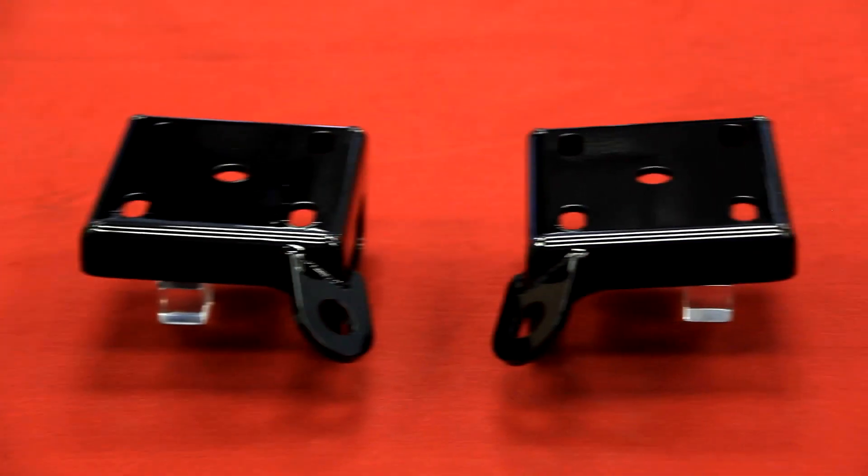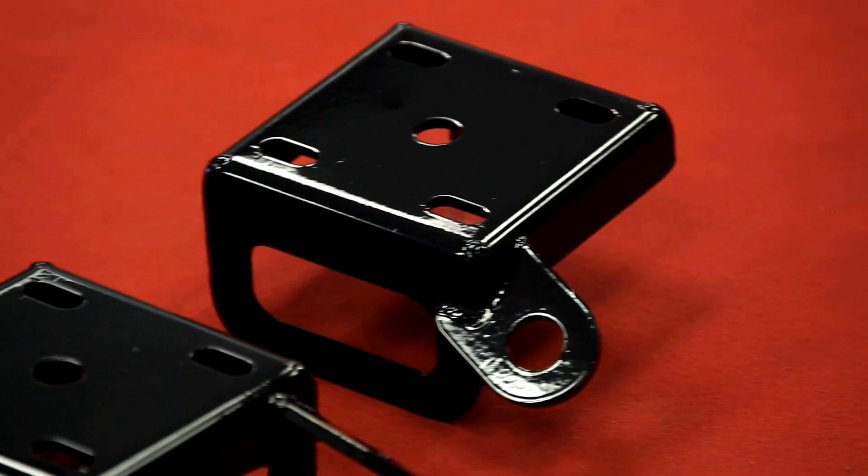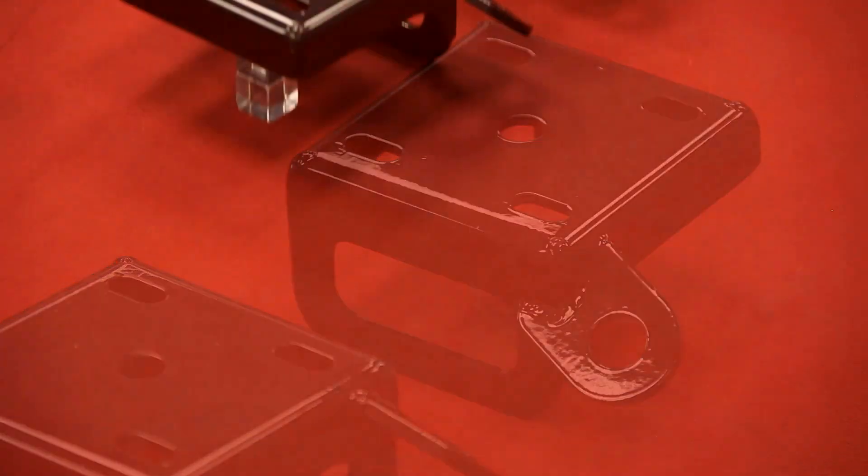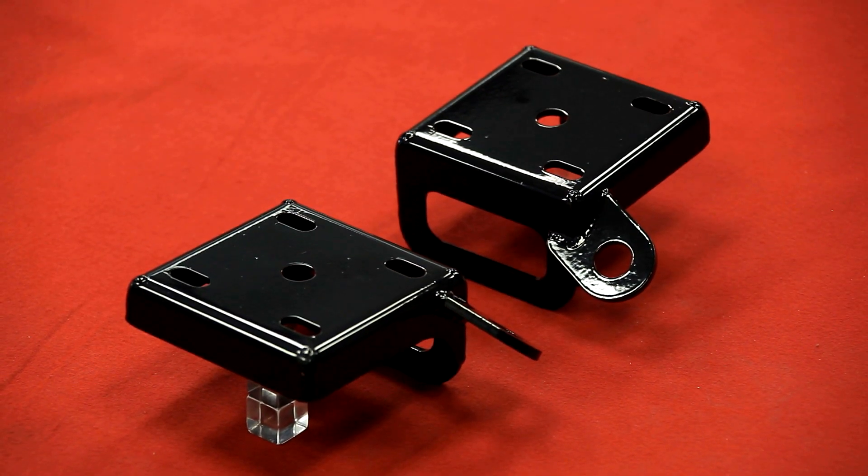The Total Control Products direct replacement leaf spring plates are manufactured from 316th plate steel, with CNC press brake form sides creating the strongest welded joints possible.